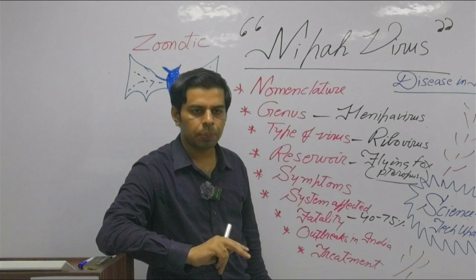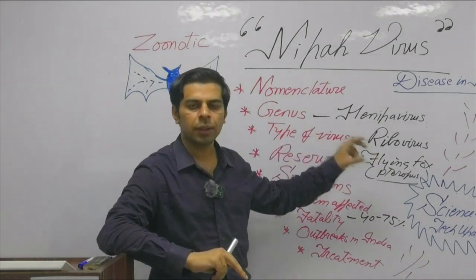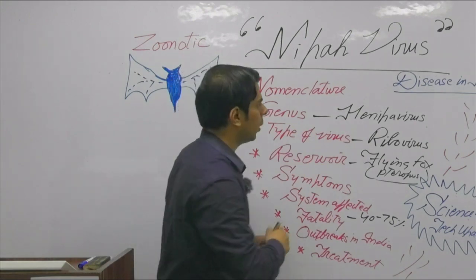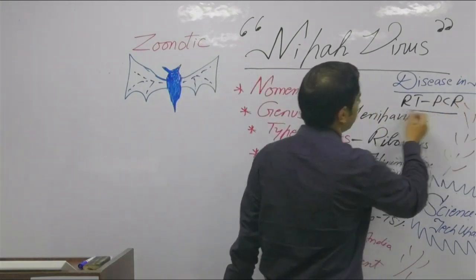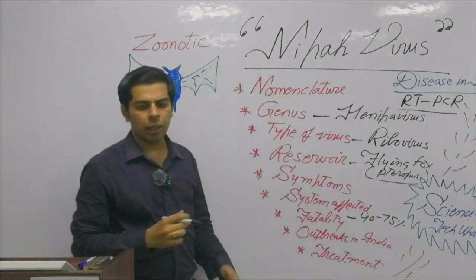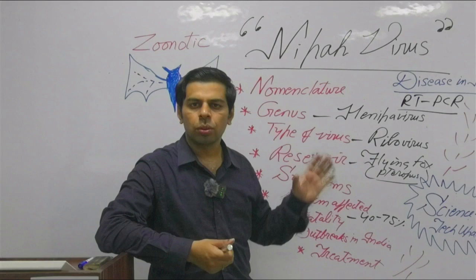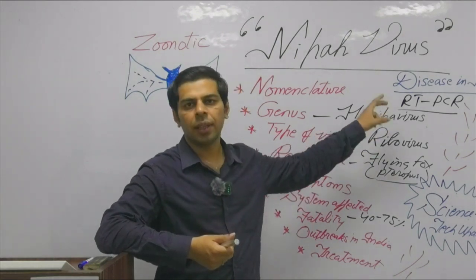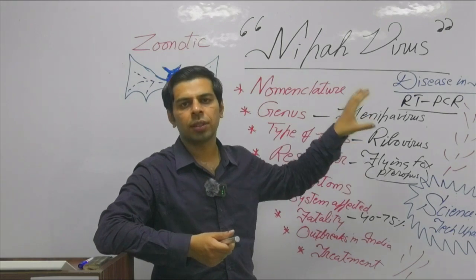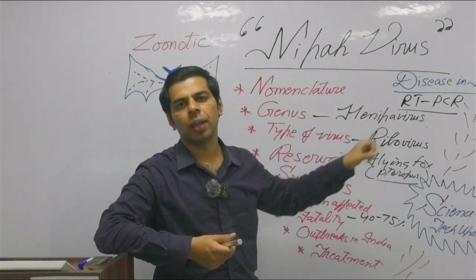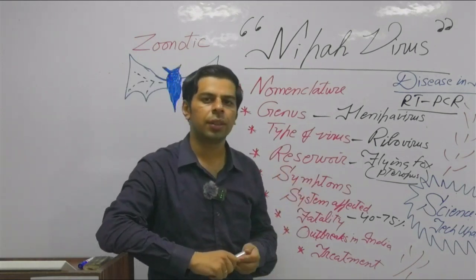Coming to the diagnosis part, we have to understand any virus which is a ribovirus - the typical tests employed are once again same as in COVID: RT-PCR. Even though it's a technical term, since you have gone through the pandemic phase, this was also the gold standard in case of COVID-19. RT-PCR is reverse transcriptase polymerase chain reaction.